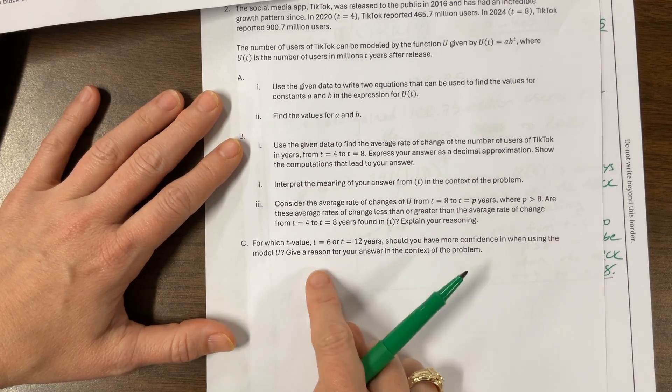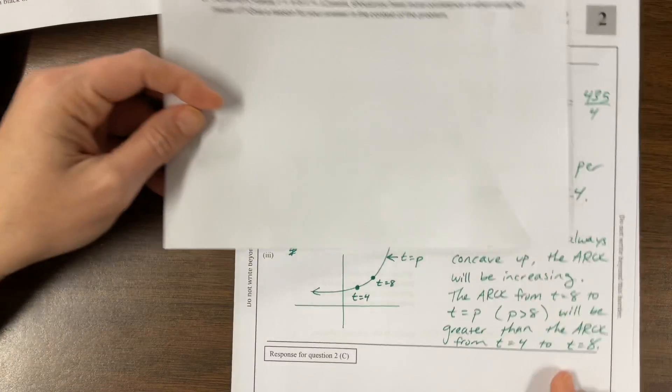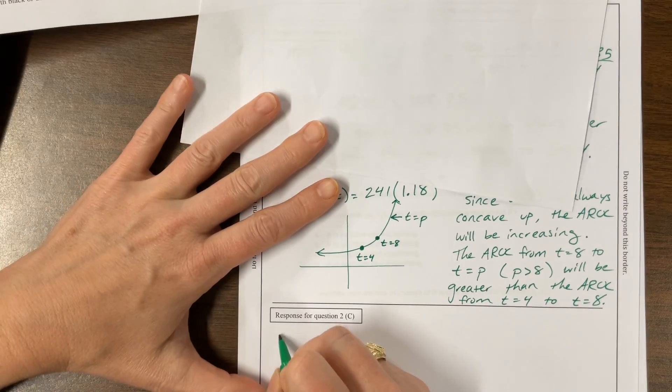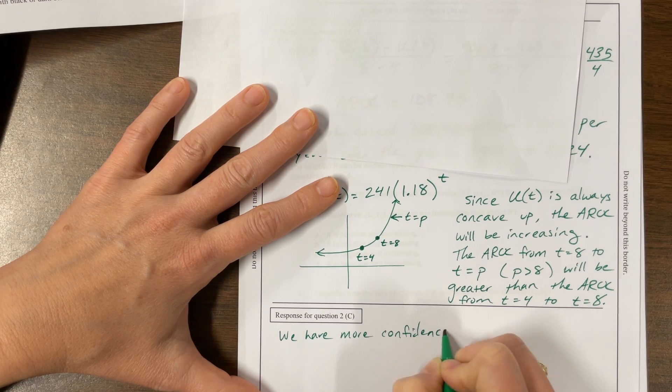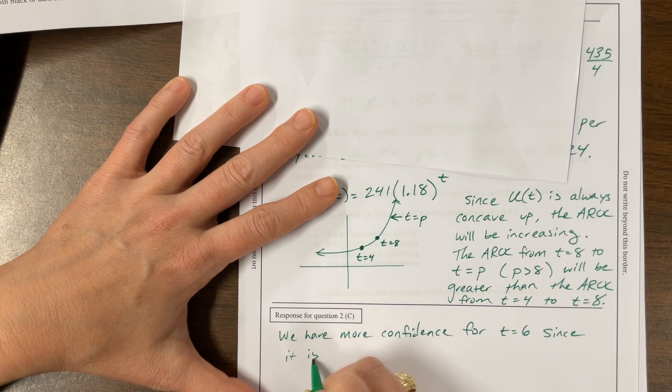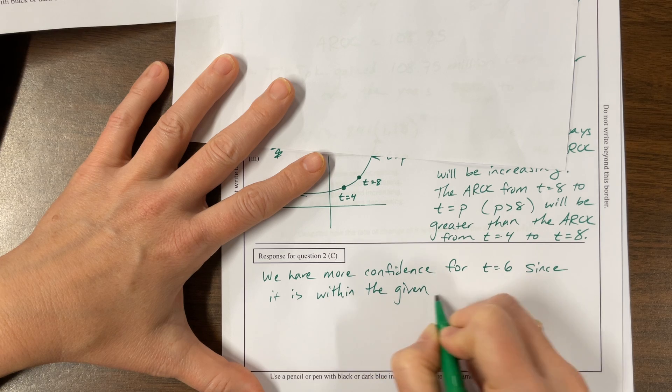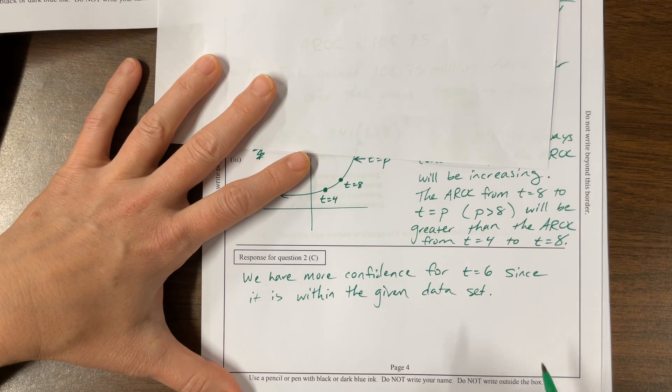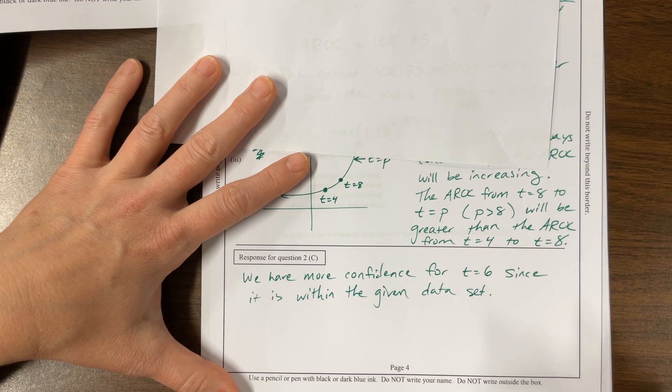I've heard that called interpolation when it's inside the data set or extrapolation when it's outside the data set. So let's see, how do we want to answer this question? We have more confidence for T equals six, since it is within the given data set. That might be sufficient. I think I'd stop there.